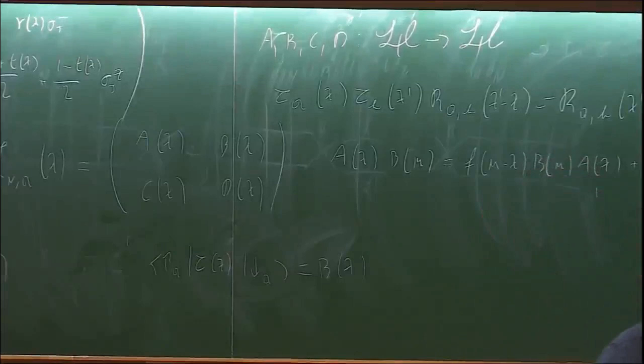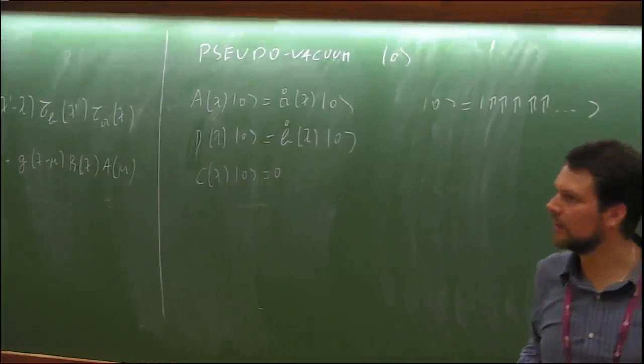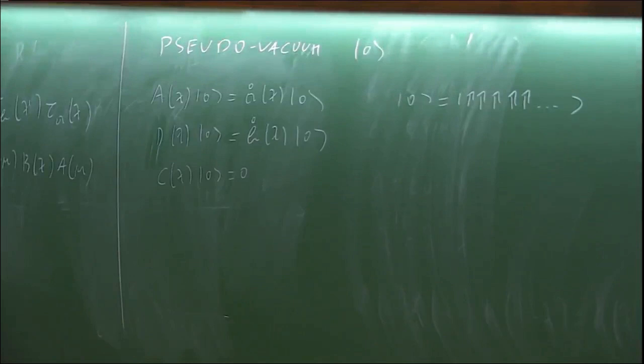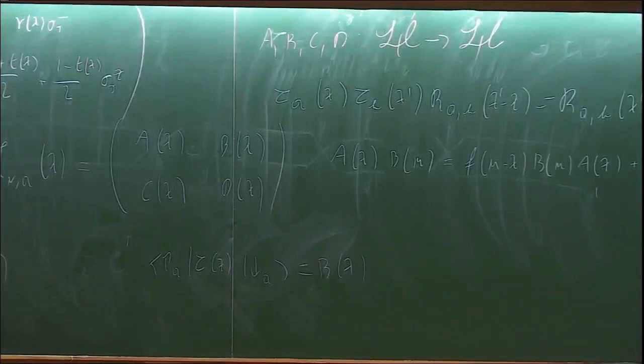For this chain, this is exactly the completely polarized ferromagnetic state pointing up. You can prove it because when you calculate the action of the L operator on such a state, the matrix becomes triangular, so the monodromy matrix becomes triangular, and therefore that state is an eigenstate, and you can prove that the annihilation condition is also true.